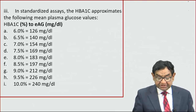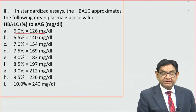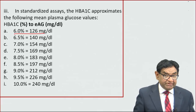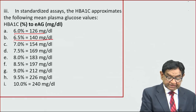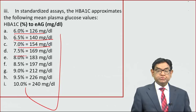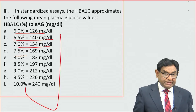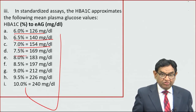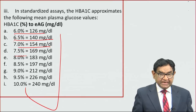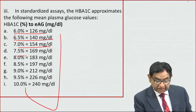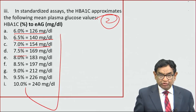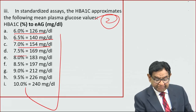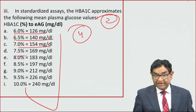The standard guideline is that when monitoring a diabetic patient, we should check both blood sugar and HbA1c. In a well-controlled patient, HbA1c should be checked at least twice a year; in uncontrolled patients, it may be checked up to four times a year.